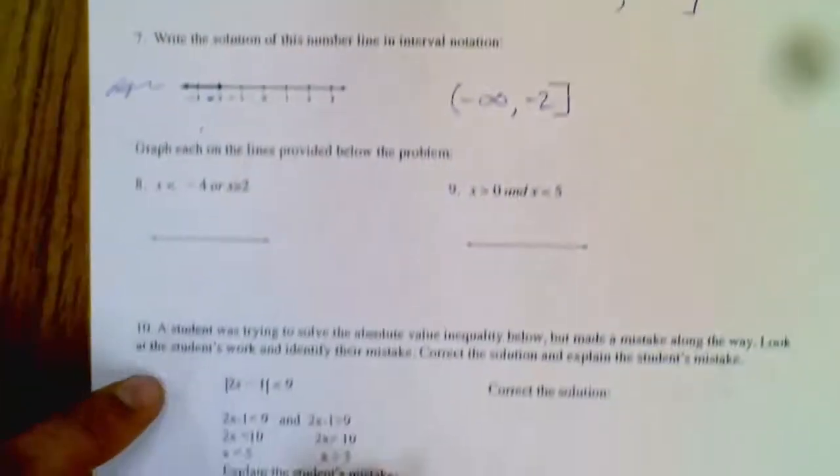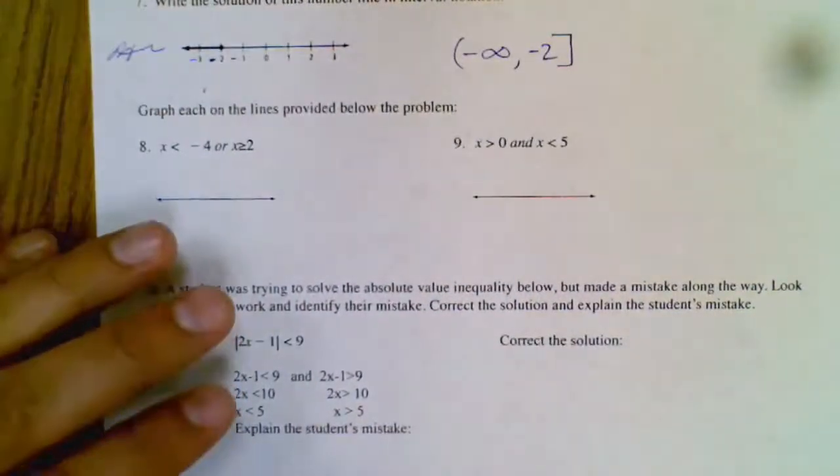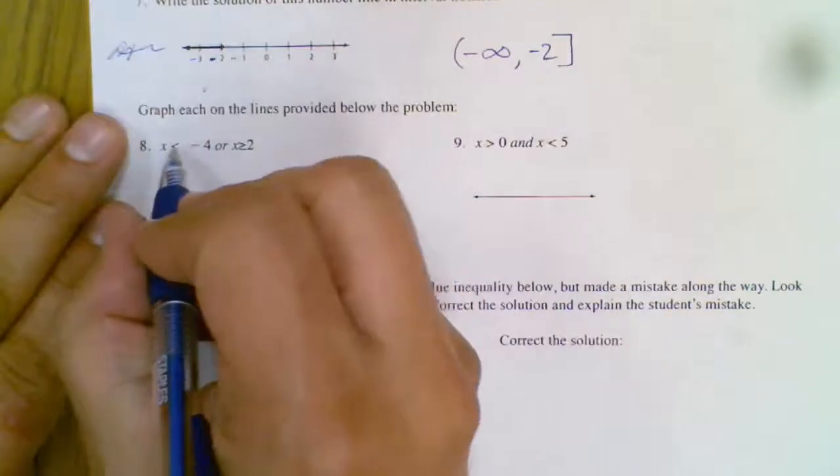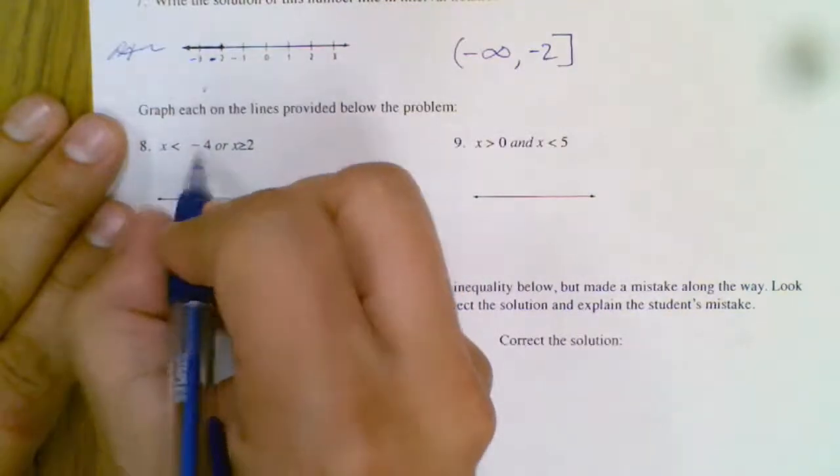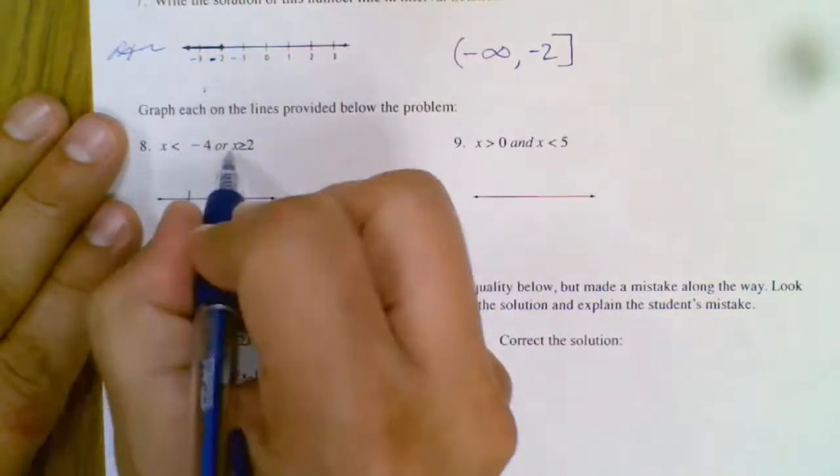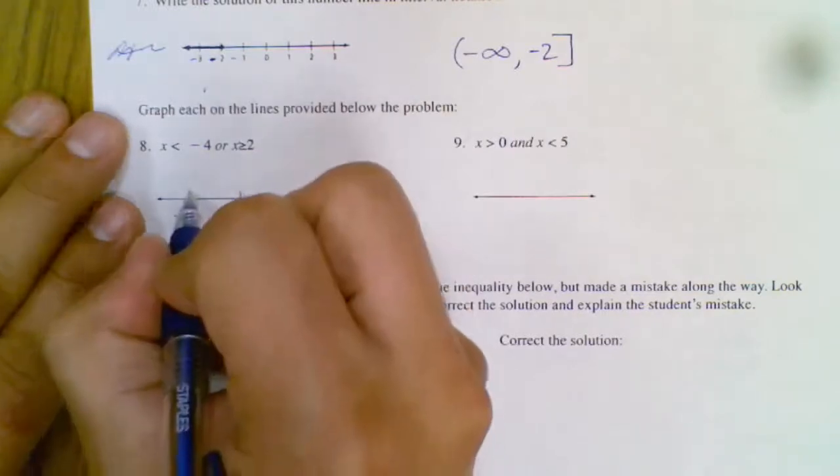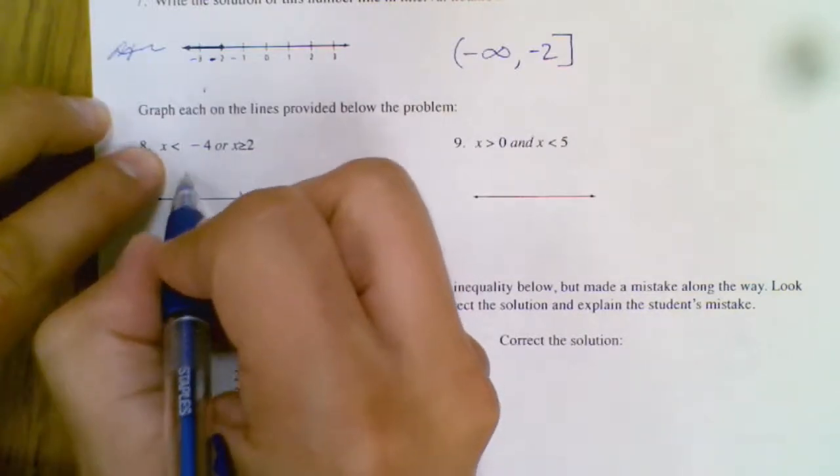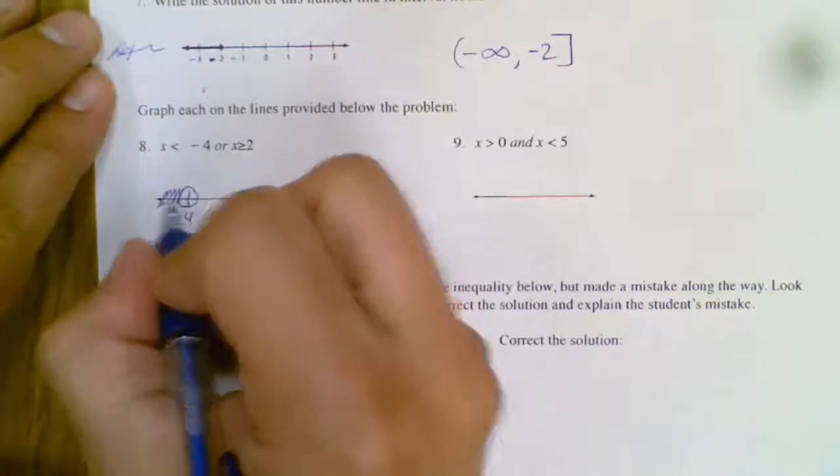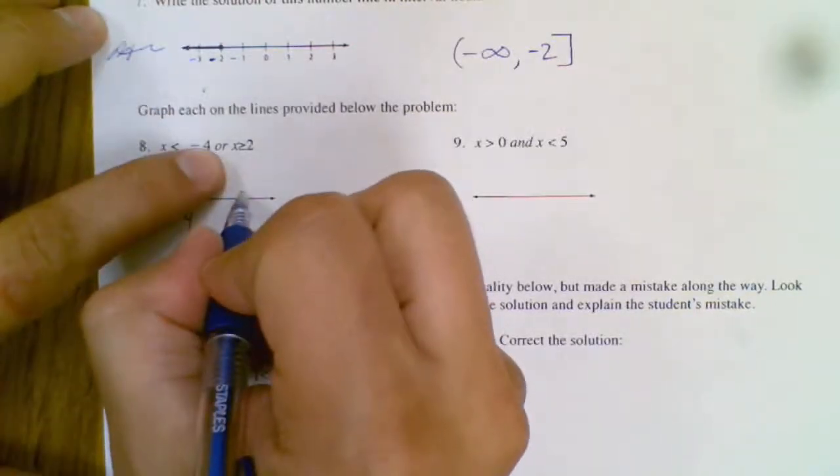Graph each of these lines provided. Okay, so we want x is smaller than negative 4 or greater than or equal to 2. So smaller would be open circle, shade left, and this is closed circle shade right because it's greater than.